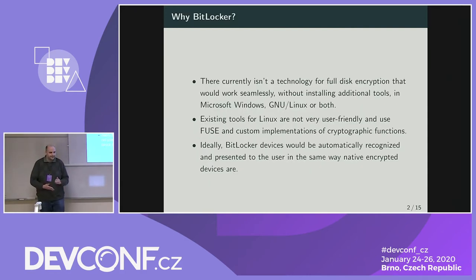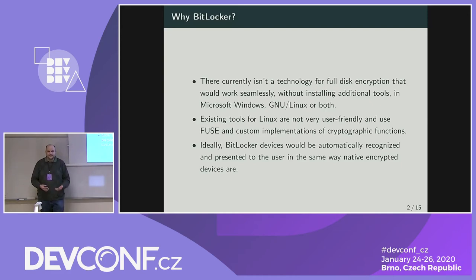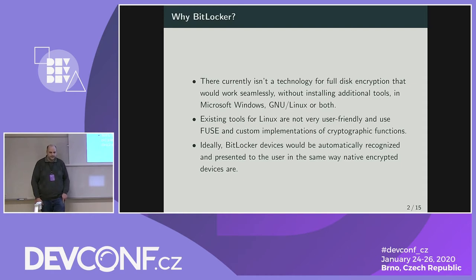Why do we even care about BitLocker? We have our own disk encryption on Linux — it's nice, it's open source. The problem is that not everyone uses Linux. There are still a lot of people using Windows — last time I checked it was around 90% on desktop. If you want to share encrypted data with those people, have a flash disk that works on both Linux and Windows, or have a dual-boot setup with an encrypted shared partition, it's not that easy. You need third-party applications and non-native encryption technologies. Existing Linux tools for BitLocker are not very user-friendly — they use FUSE and implement custom cryptographic functions. Ideally, BitLocker devices should behave the same way native encrypted devices behave in Linux: you plug in a flash drive, you're asked for a passphrase, and then you can work with it.